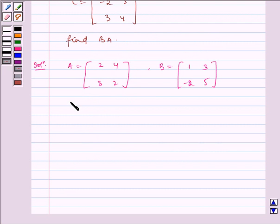Now, since the number of columns of B is equal to the number of rows of A, which is equal to 2, therefore BA exists.